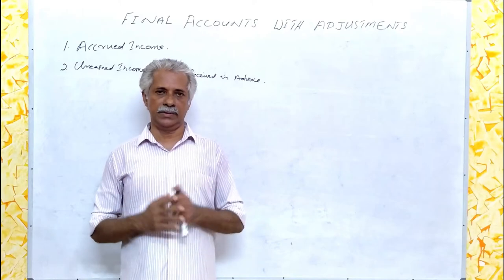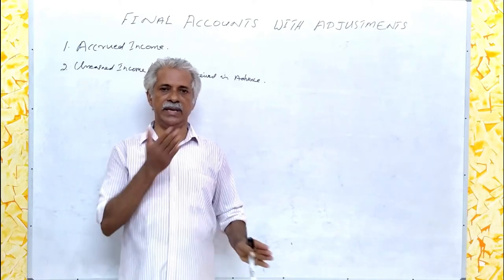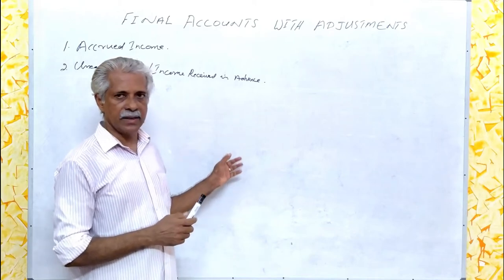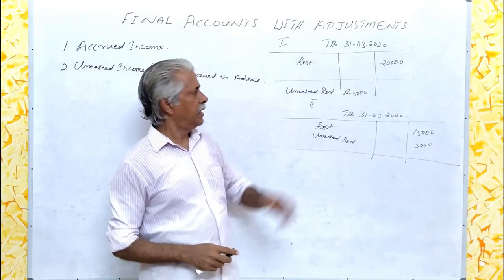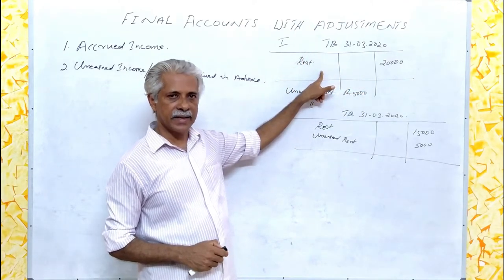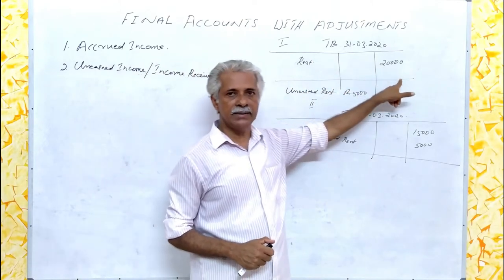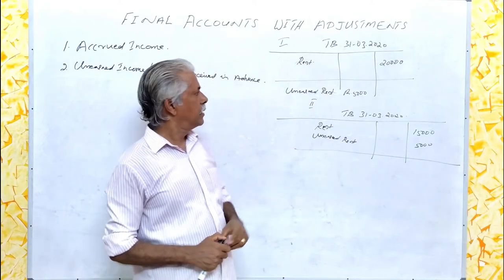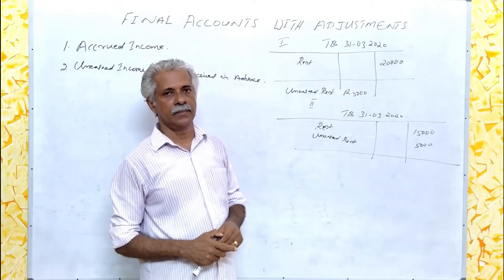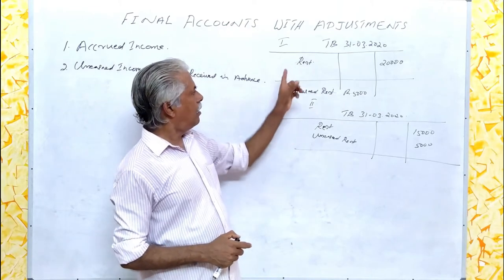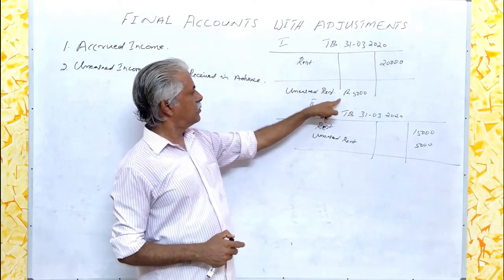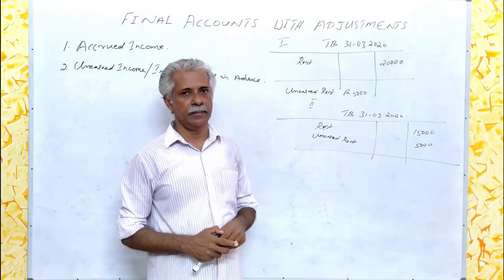How is it to be dealt with in final accounts? That depends upon whether it is given in the adjustment or in the trial balance. I shall illustrate it with an example. Here two trial balances are given. In the first case, there is one item in the trial balance with a credit balance — that is rent. Whenever rent is given as a credit balance, it implies that this is an income. Then in the adjustment, it is given that there is unearned rent of rupees 5,000. It means of the rent given in the trial balance as rupees 20,000, rupees 5,000 belongs to the next accounting period.